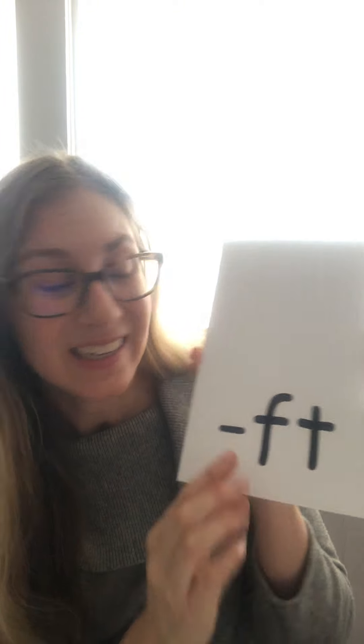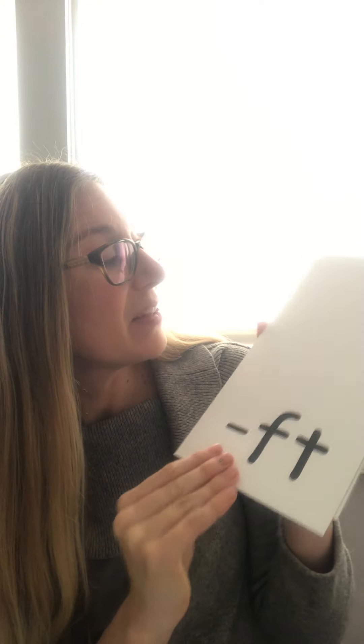A consonant blend takes place when two or more consonants blend together in a word. Some common ending consonant blends contain the letter T, like ST in the word last, and ST in the word left.